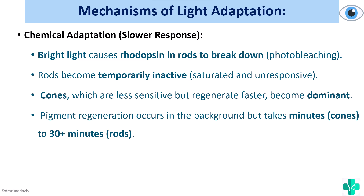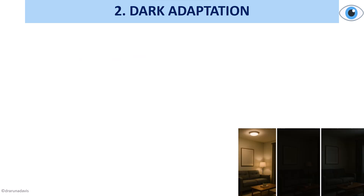The second important mechanism is chemical adaptation. When there is bright light, the rhodopsin in the rods breaks down — known as photobleaching — and the rods become temporarily inactive. During that time, the cones, which are less sensitive than rods, regenerate faster and become dominant, helping vision initially. Pigment regeneration occurs in the background but takes longer. For light adaptation, neural adaptation is more important than chemical adaptation.